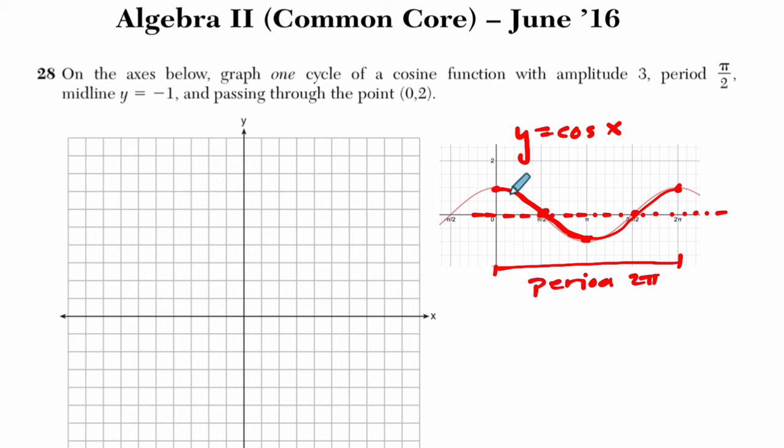The amplitude would be how far above the midline and below the midline the highest and lowest points are. So in this function we're told the amplitude is 3. It's going to stretch 3 above and below the midline. They tell us the midline is y equals negative 1. So I can graph that really quick. Here's y equals negative 1.